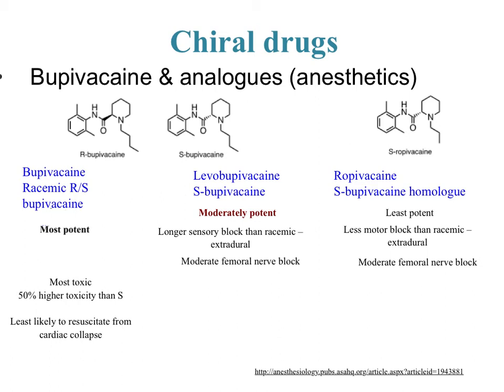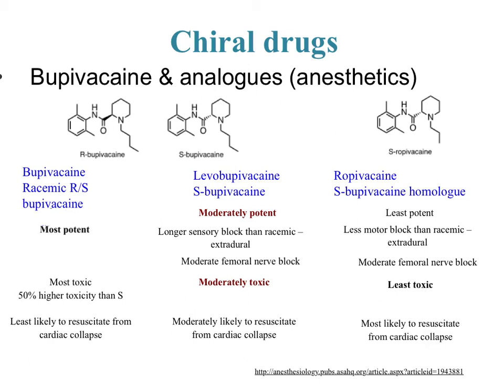They first tried taking just the S enantiomer to see if that was safer. They found that S-bupivacaine alone is still moderately toxic — you're moderately likely to be resuscitated if you have a cardiac collapse. That's better than the racemic mixture, but still not ideal. Looking at the homologue, it's the least toxic and you're most likely to be resuscitated from a cardiac collapse, making it the ideal option from a side-effects standpoint.